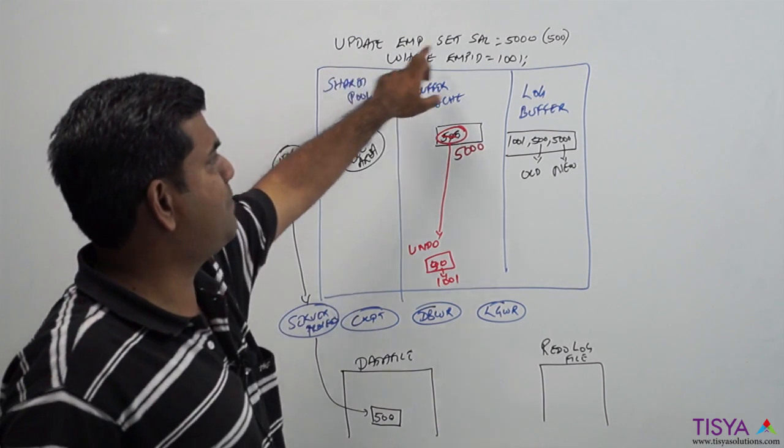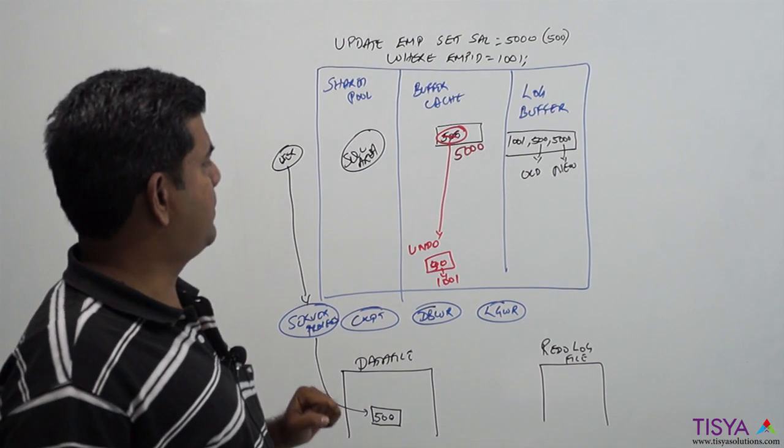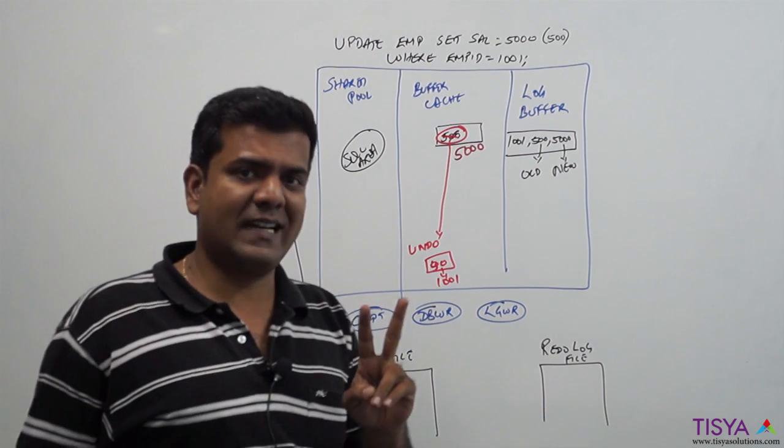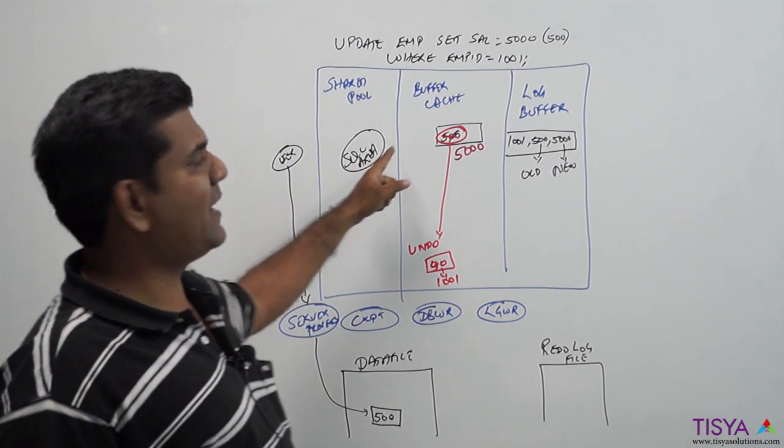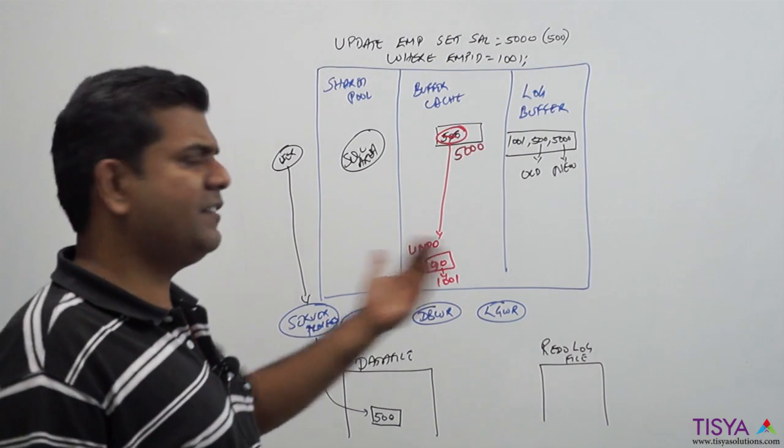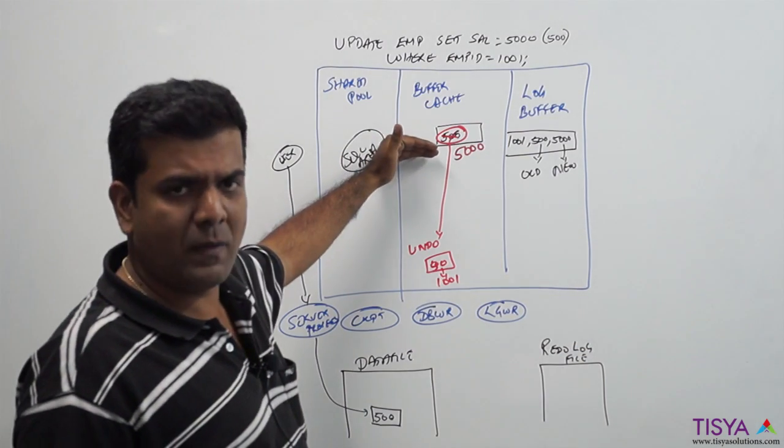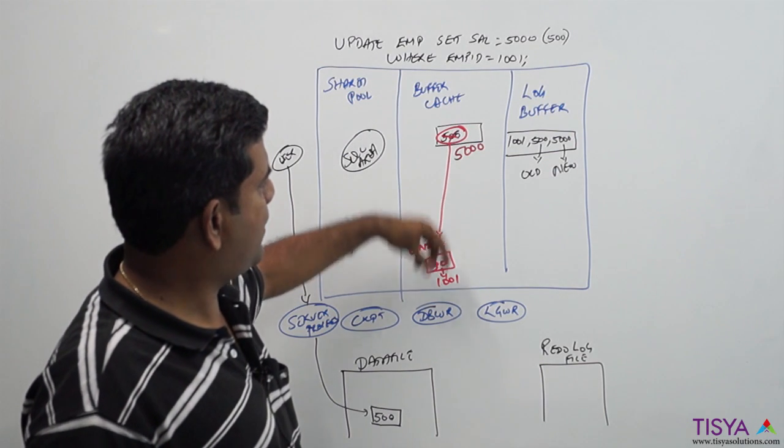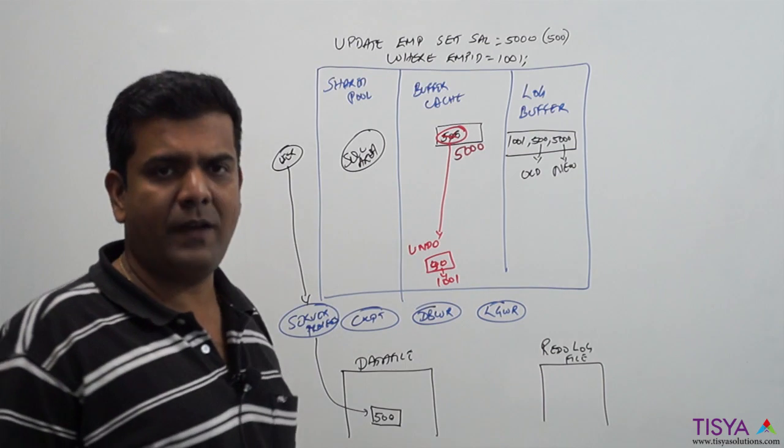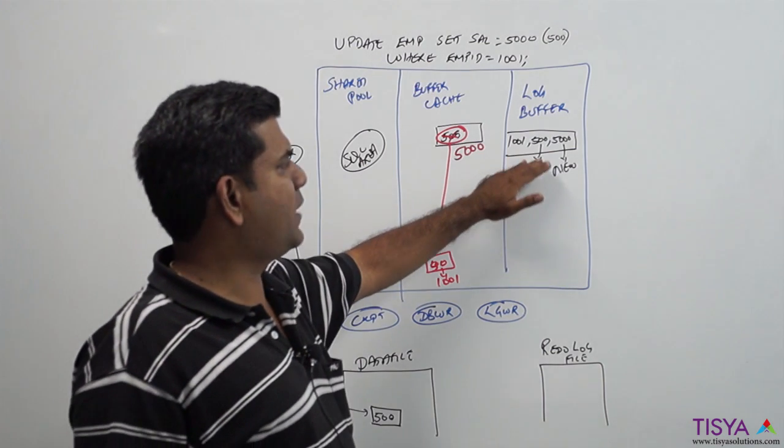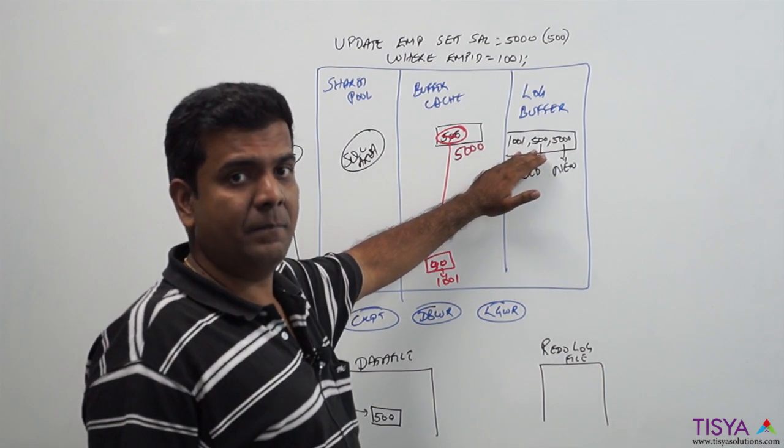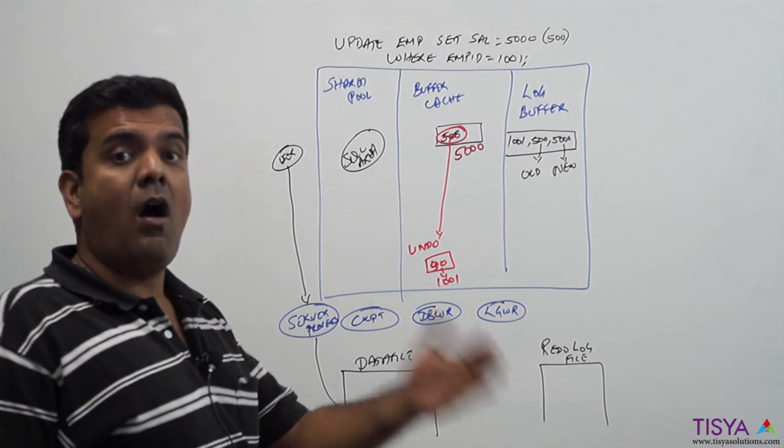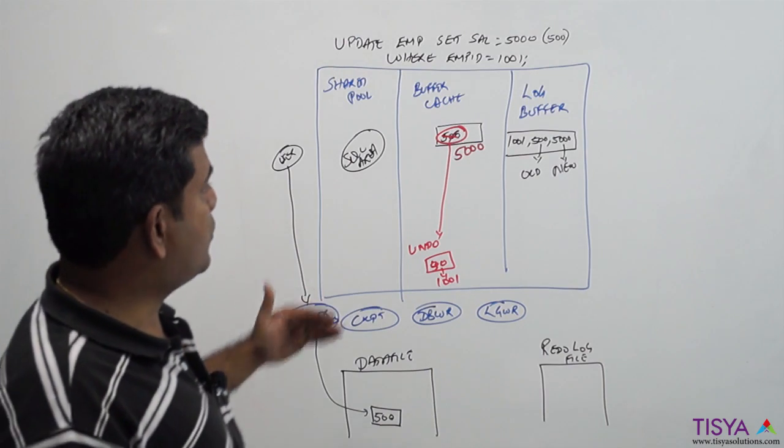We have just said UPDATE EMP SET salary - this is neither committed nor rolled back. Now we have two choices that can happen next: the user can issue a rollback or he can issue a commit. If he issues a rollback, it will take the value from undo and put it back. It will override 5000 to become 500. There is no need for any entry here and user is told rollback complete.